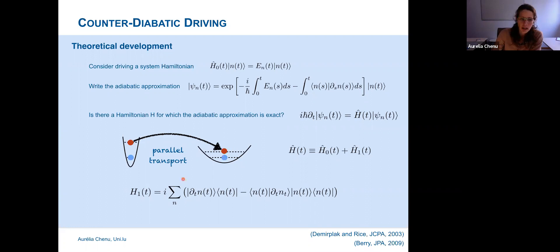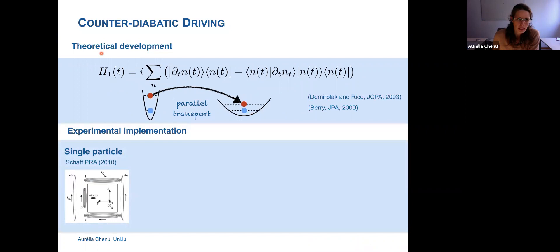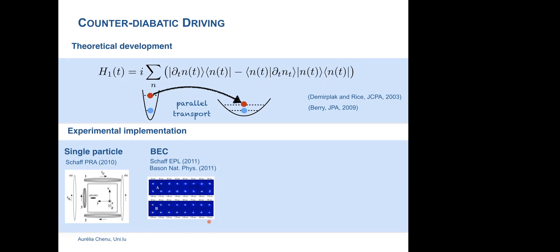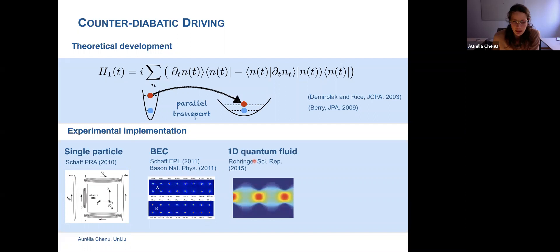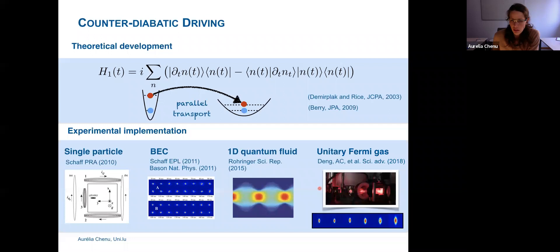These techniques have been widely studied theoretically, and there have been experimental implementations: first in the single-particle problem, where they remove modes of sloshing and breathing; then in BEC, where control allows removal of breathing modes as well. It's been implemented in 1D quantum fluids, and I'm going to present implementation in a 3D unitary Fermi gas.